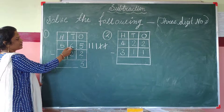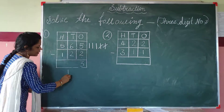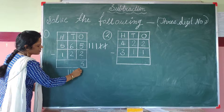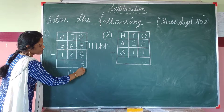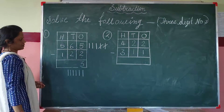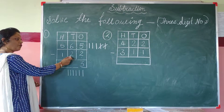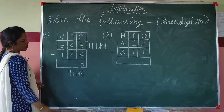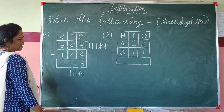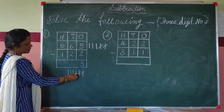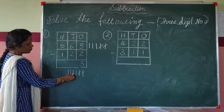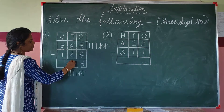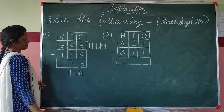Now we draw 6 lines for the ten's place: 1, 2, 3, 4, 5, 6. We cut 2 lines: 1, 2. How many lines are left? 1, 2, 3, 4. We write 4 at the ten's place.